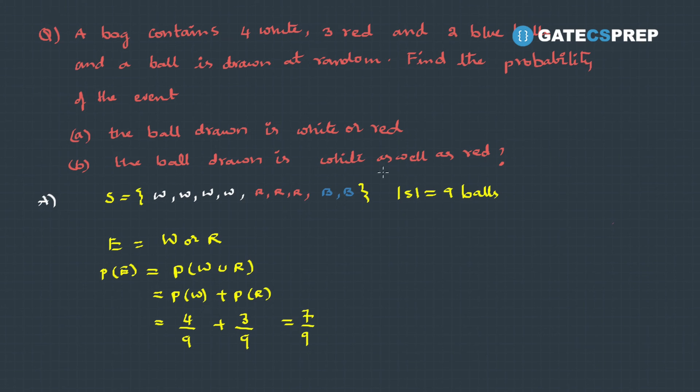The second event is the ball drawn is white as well as red, that's white and red. Here the probability can be thought of as probability of white intersection red. And you can clearly see there is no ball which is both white as well as red. Therefore this is 0.